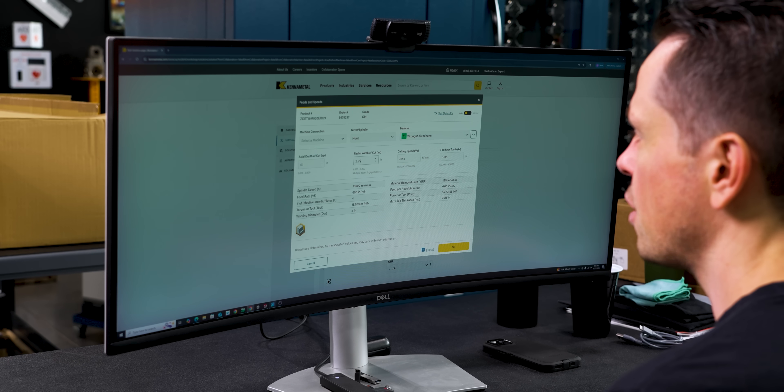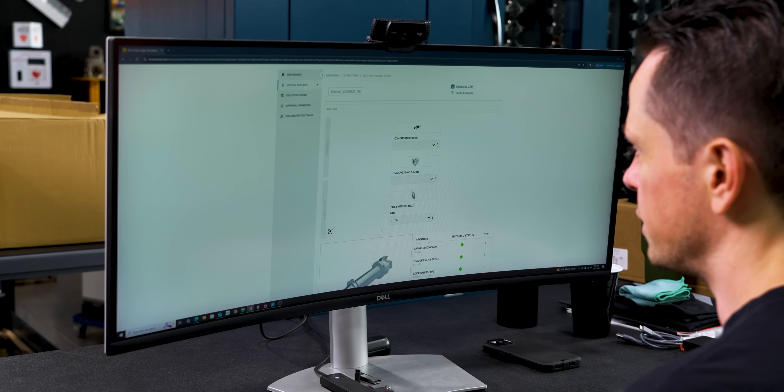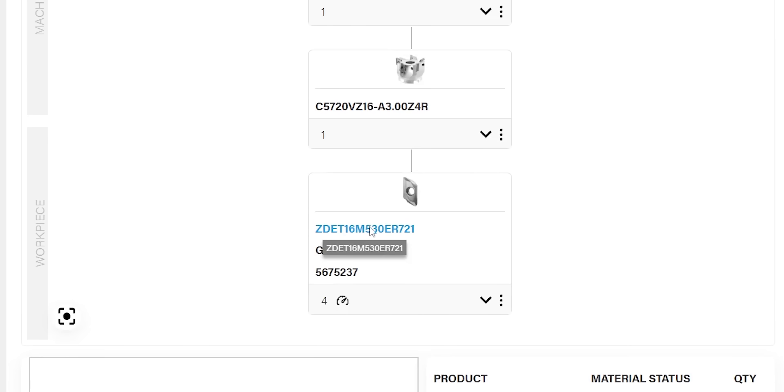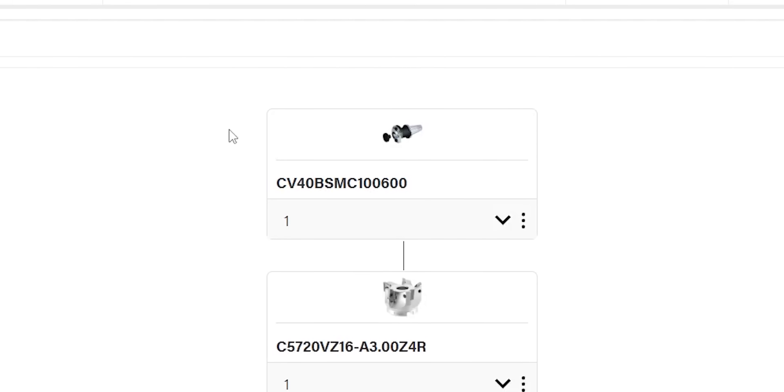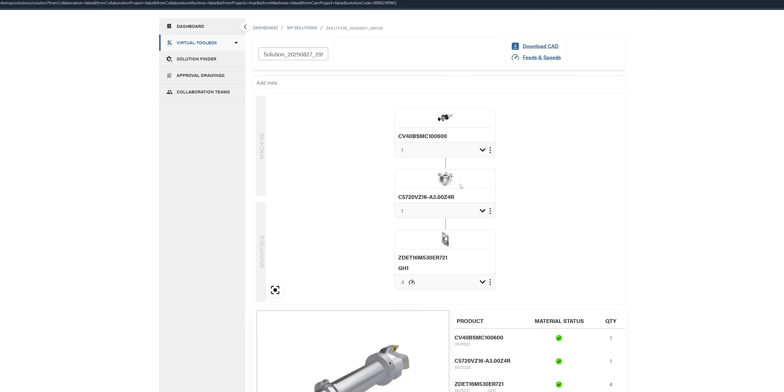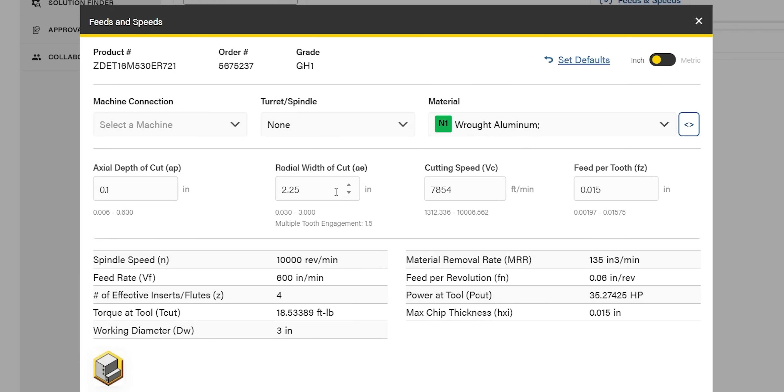This chart's going to make a lot more sense once we look up what our tool will actually need to run at the programmed feeds and speeds. So to do that, we can get on Kennametal's website and we can build out our exact tool assembly. I've got the inserts I'm using here, the face mill I'm using here, and the adapter that it's mounted on. After we've got our assembly built, we can come up here and click on feeds and speeds, and then we can type in our axial depth of cut, which in this case was 0.1.